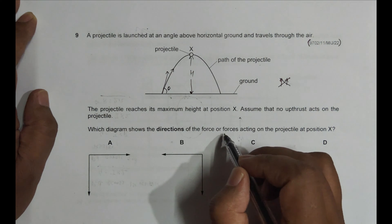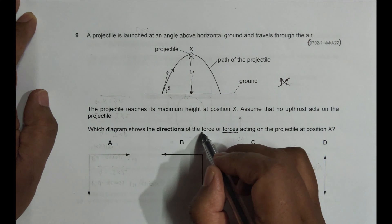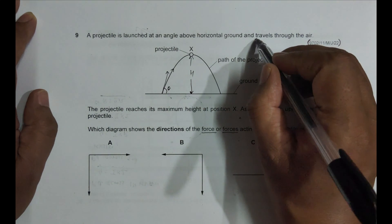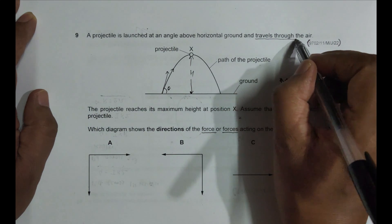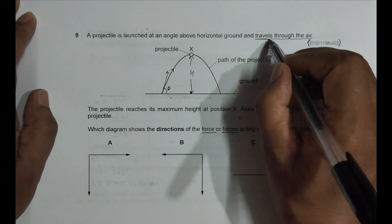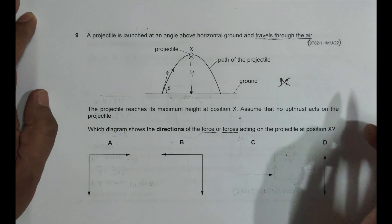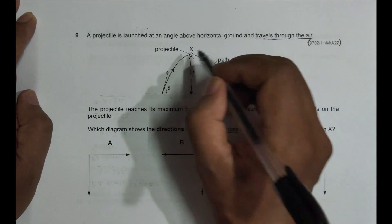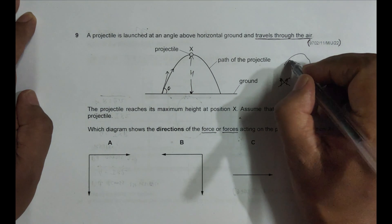So we have to show the directions of the force or forces. Let's take care of this word 'force or forces'. As it has been declared here that it travels through the air, we have to consider the air resistance as well. So here one of the forces is the force of gravity.